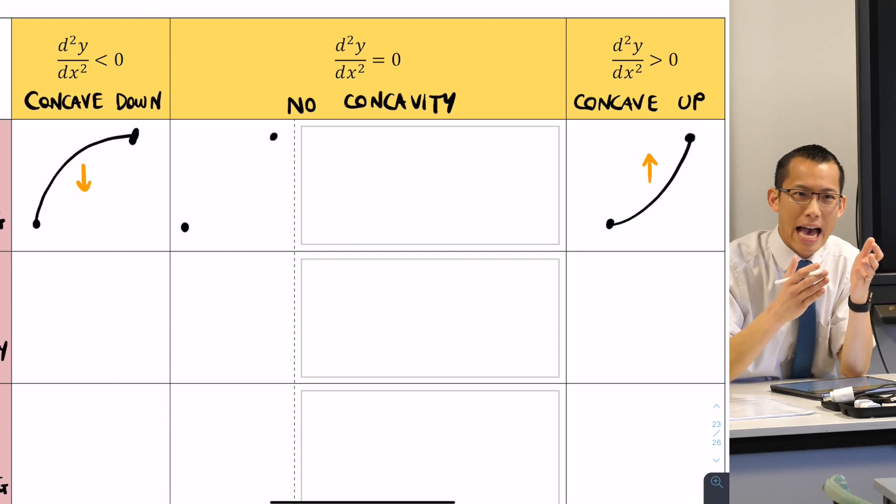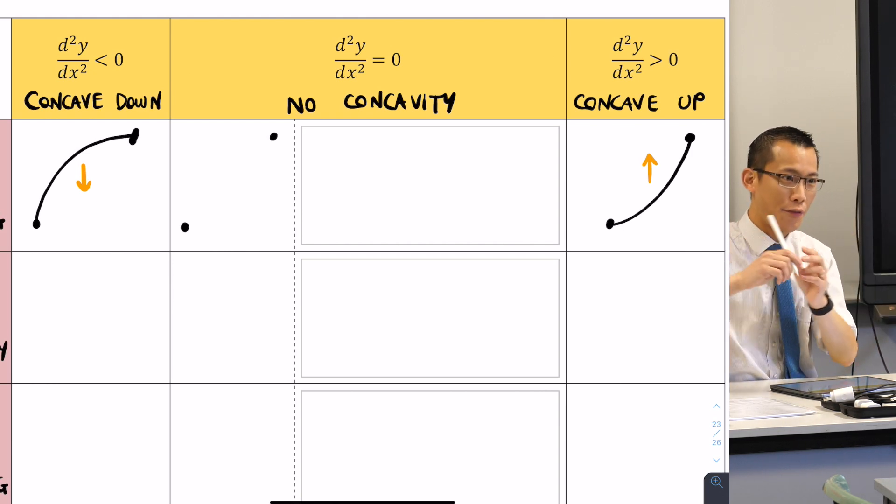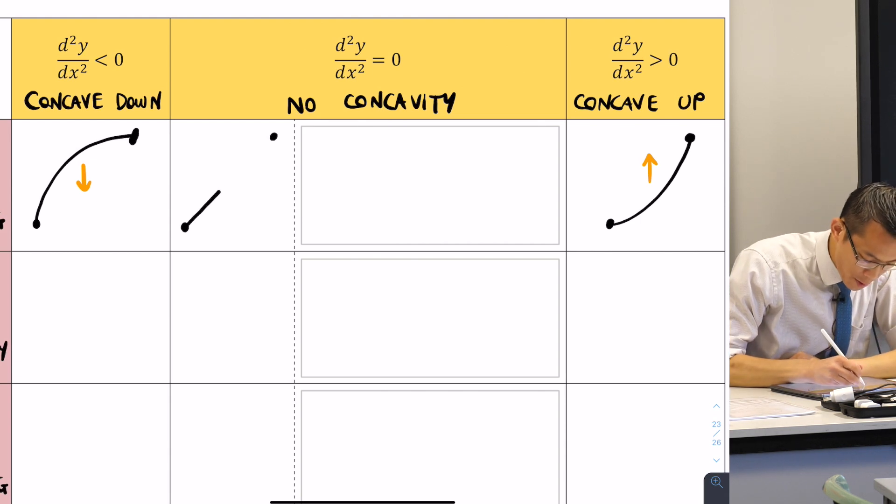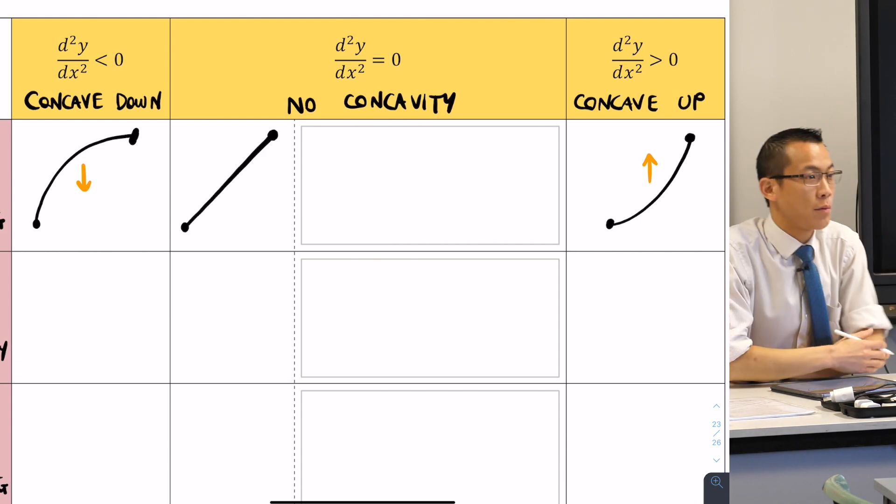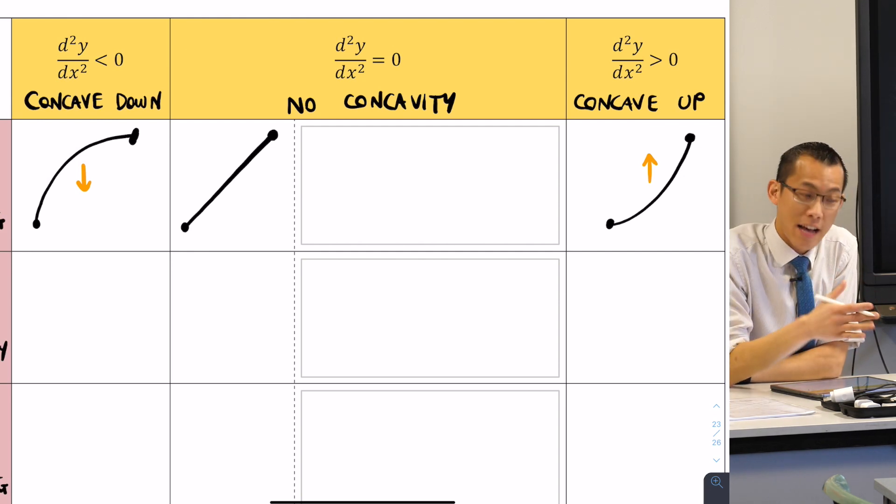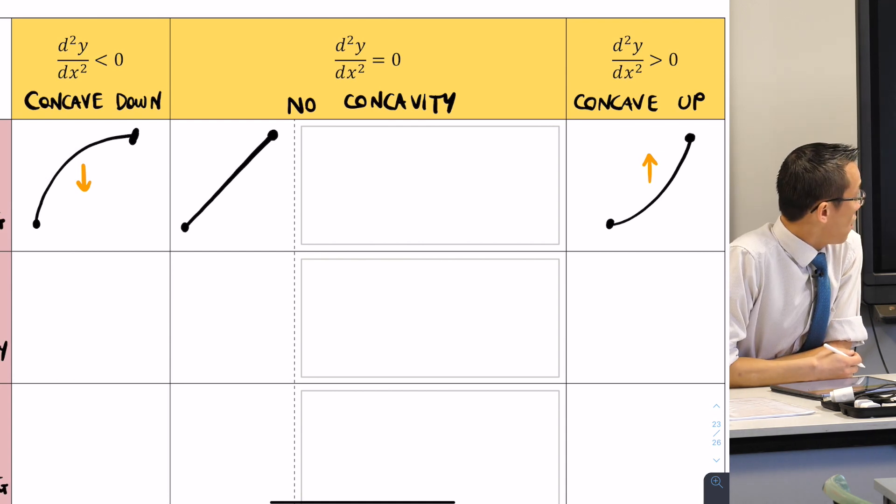Now if there's no concavity, it's not flexing one way, it's not flexing the other. So in fact, it's actually just flat. So we could draw a straight line here from the bottom left to the top right. That's not concave up, it's not concave down, it doesn't have any concavity whatsoever.